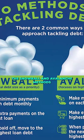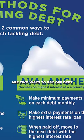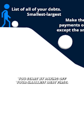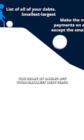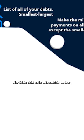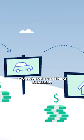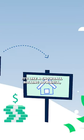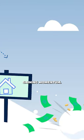The snowball and avalanche methods are two ways to pay off debt. With the snowball method, you start by paying off your smallest debt first, no matter the interest rate. As you clear each debt, you move on to the next smallest. It's like a snowball rolling downhill, gaining momentum.